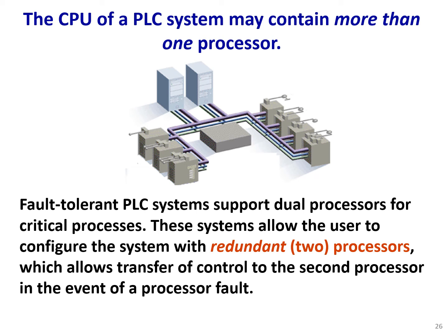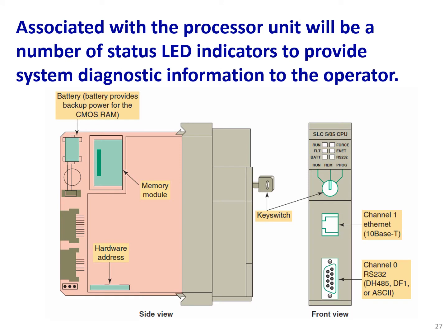Associated with the processor unit is a number of status LED indicators to provide system diagnostic information to the operator. Similar to I/O modules having LEDs that show input and output status, the CPU also has status LEDs to show whether it is running, stopped, paused, or faulty — used for diagnostics by the operator to see the status of the processor and PLC.